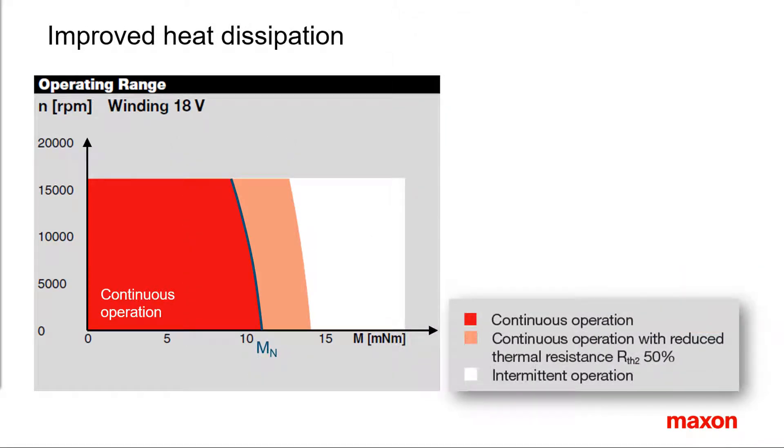At the nominal torque, the maximum winding temperature is reached under standard conditions. If heat dissipation is better than standard, the continuous operating range extends towards higher torque values.